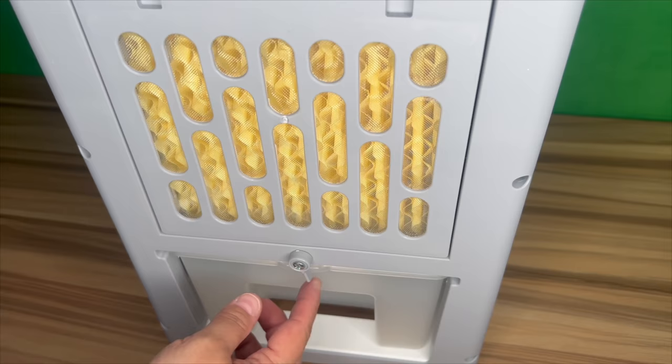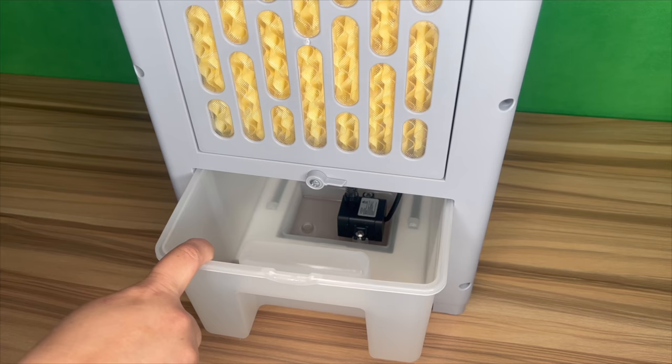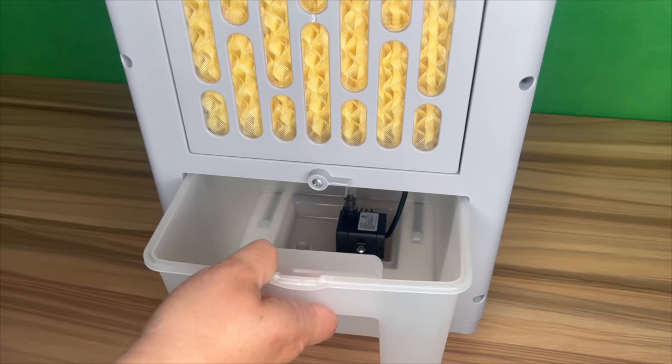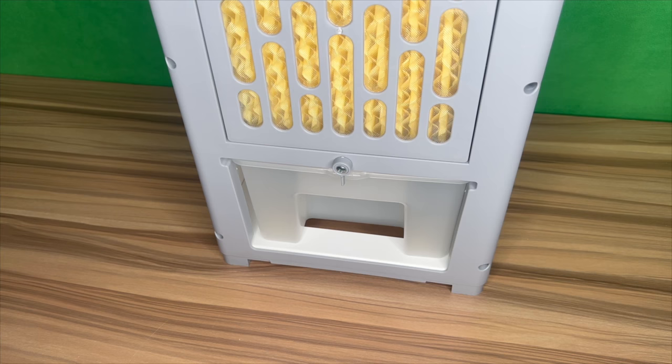This uses 80 watts. The dimensions are 10.2 by 8.7 by 26.8 inches. When you want to expose the water tank, you just push this sideways, pull it out. This is where you will put some of your water in here to fill it up. If you want to fill it up from the top tray, you can do that as well. When you're done putting the water in, you can lock it in place so it doesn't come out.